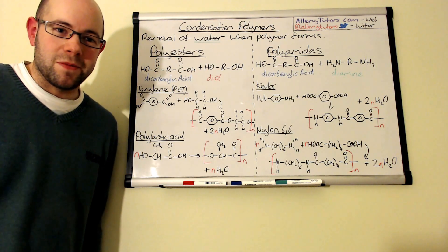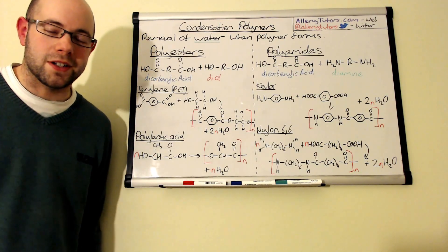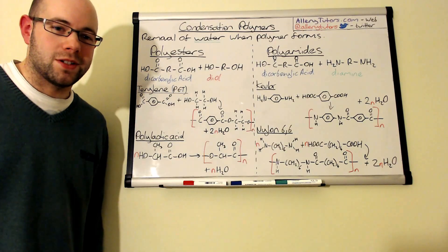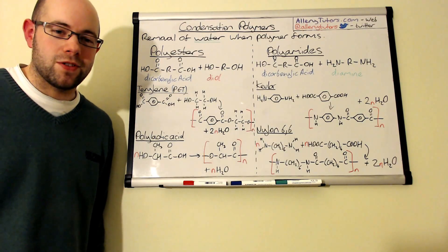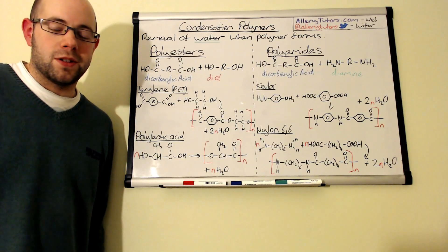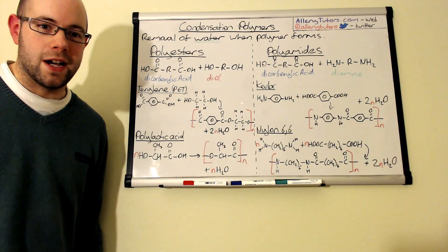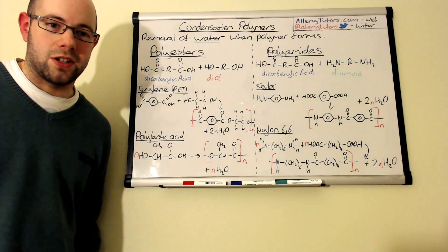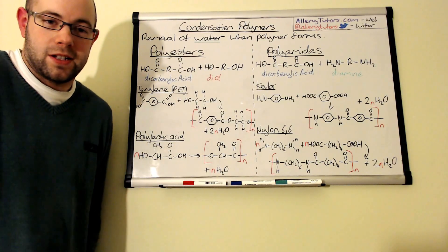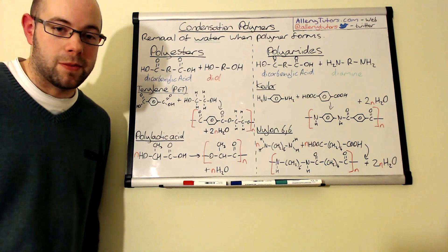My name is Chris Harris and I'm from aloetutors.com. In this video we're going to look at condensation polymers. There are two types of polymers you need to know for A-level chemistry: addition polymerization and condensation polymerization. There's a video that looks at addition polymers, so just click the link below to go to that. In this video, we're going to look at condensation polymers.